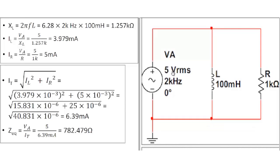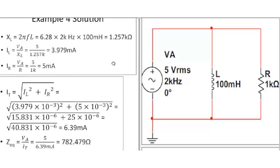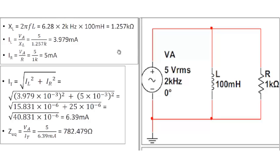It doesn't matter how you express the output voltage — whether it's peak, peak-to-peak, or RMS — as long as you maintain consistency throughout. On the left, the first thing you do is find the inductive reactance using the formula 2πFL. You plug in your values for frequency F and inductance L, and you get 1.257 kilohms.